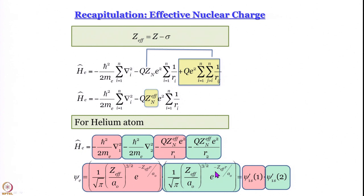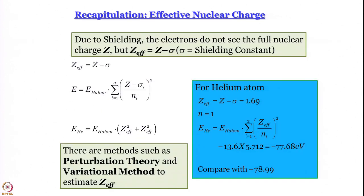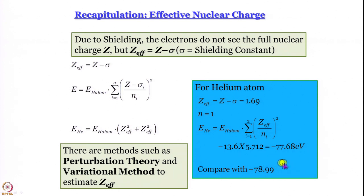For the helium atom, the Hamiltonian is a sum of four terms shown in different colors for each electron, and the wave function is a product of two wave functions — one in electron 1, one in electron 2. We work within the orbital approximation, using 1s orbitals with only radial dependence. We did a fact check and found that working with Z_eff gives a theoretical energy close to the experimental value, though the theoretical value is more positive than the real experimental value.